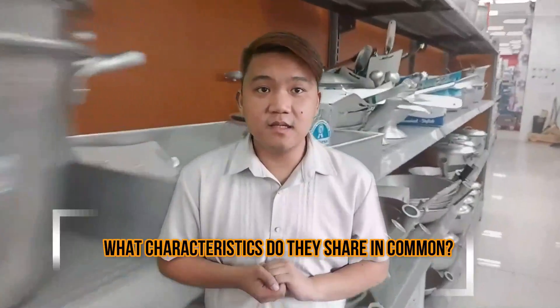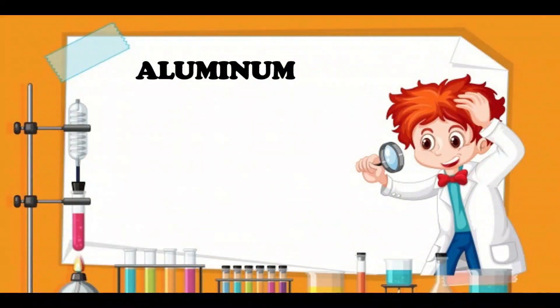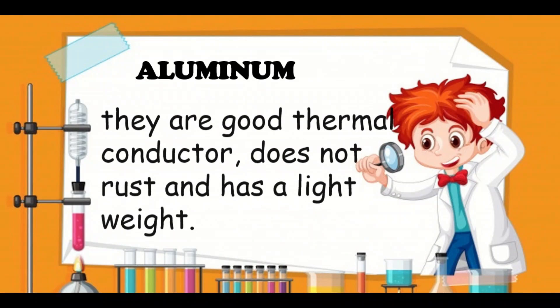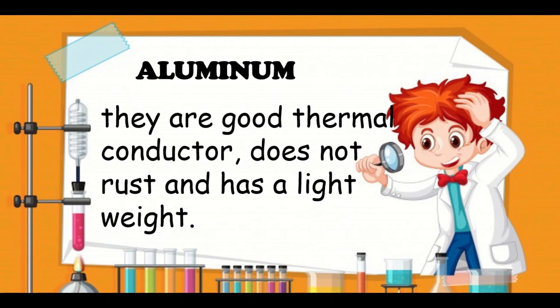Let us observe these examples. What characteristics do they share in common? They are aluminum. Their good thermal conductivity means they do not rust and have a light weight.